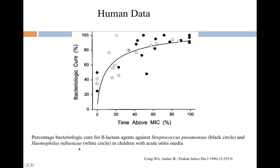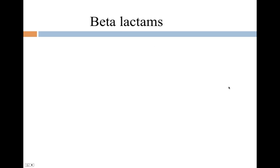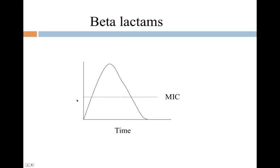Here's human data for beta-lactam agents against Strep pneumoniae. Time above the MIC is what we would expect to be most important. We can see bacteriologic cure increases as we increase time above the MIC. If we can get to 100%, we're at almost 100% cure rate. If we can get into the 60% range and higher, we're going to eradicate the bacteria for the most part with beta-lactams, which are time-dependent killers. Optimizing time above the MIC — keeping it at least 60% — is what determines whether beta-lactams will be successful.